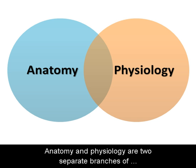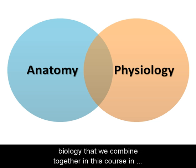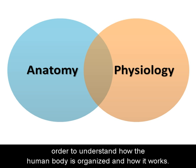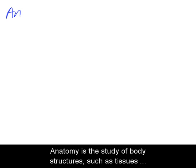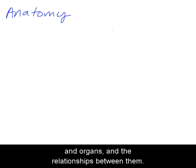Anatomy and Physiology are two separate branches of biology that we combine together in this course in order to understand how the human body is organized and how it works. Anatomy is the study of body structures, such as tissues and organs, and the relationships between them.